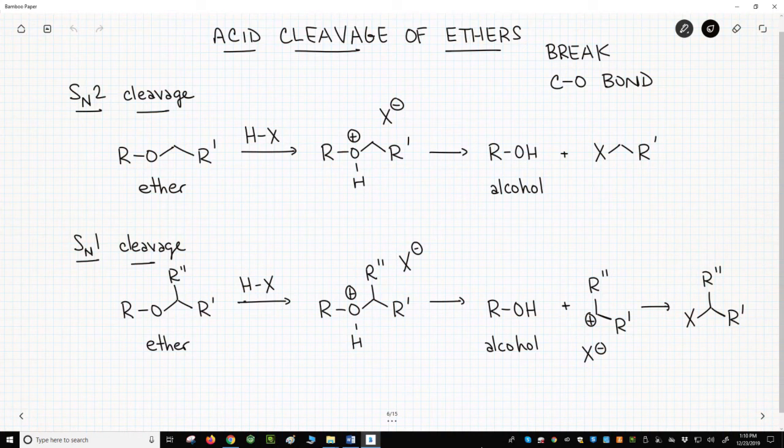Both involve strong acids, and the first step is to protonate the ether oxygen with our acid. The result of this step is to make a leaving group on our ether. What happens to that leaving group differentiates the two pathways.